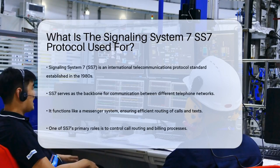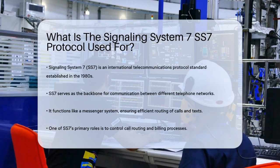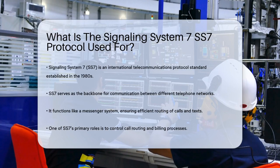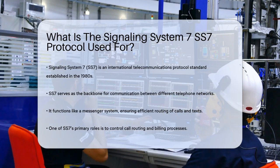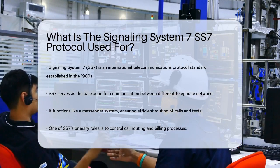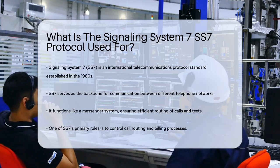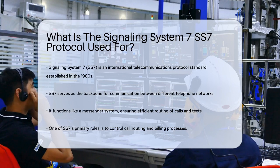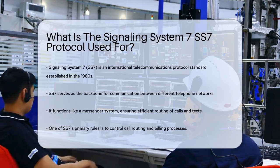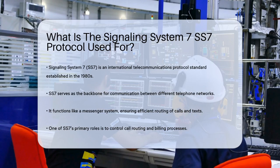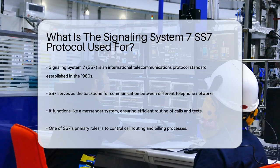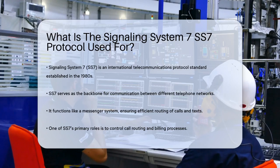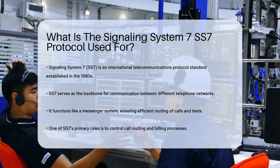If you've ever wondered how your phone calls and text messages are routed across different networks, especially when you're traveling abroad, you're about to uncover a crucial piece of technology that makes it all possible. Let's dive into the world of Signaling System 7, or SS7. SS7 is an international telecommunication protocol standard that has been around since the 1980s. It's the backbone that allows different telephone networks to communicate with each other. Imagine it as a sophisticated messenger system that ensures your calls and texts reach their destinations efficiently.